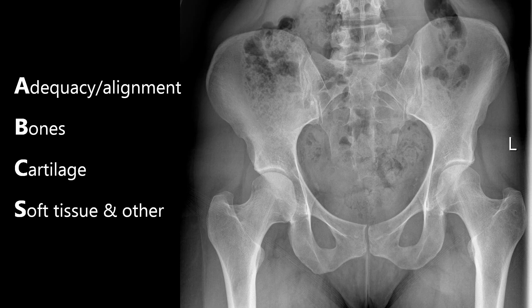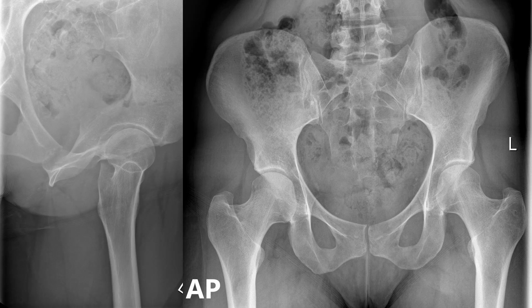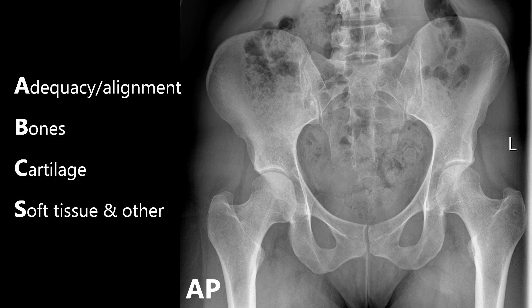Before you start to interpret any medical image, it's essential to check the patient demographics, image time and date to make sure that you have the right image for the right patient. Hip x-rays are usually taken in anterior posterior projection, or AP, which means the patient is facing the x-ray source. However, to avoid missing fractures, it's also good practice to have a lateral hip x-ray to interpret alongside it. This video will focus on AP projected hip x-rays, as these are the ones you'll come across most commonly in medical school exams.